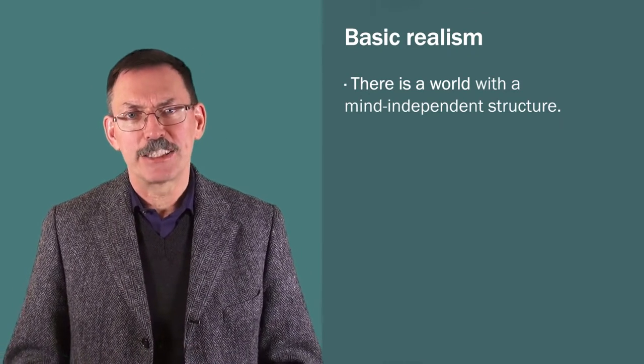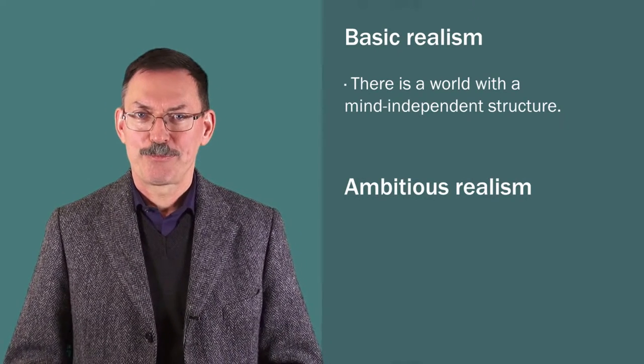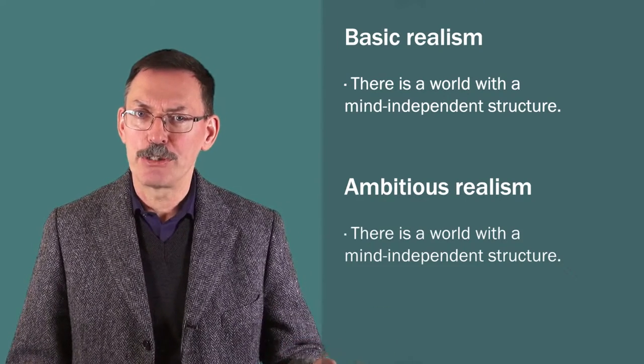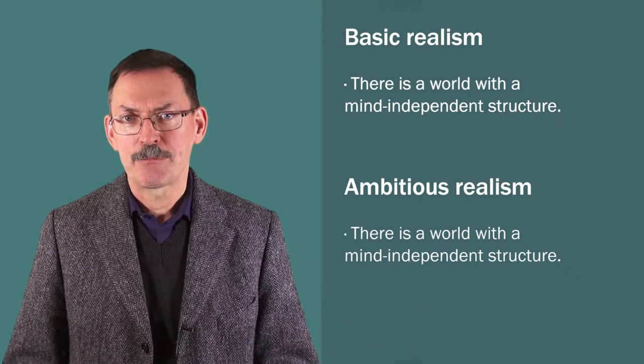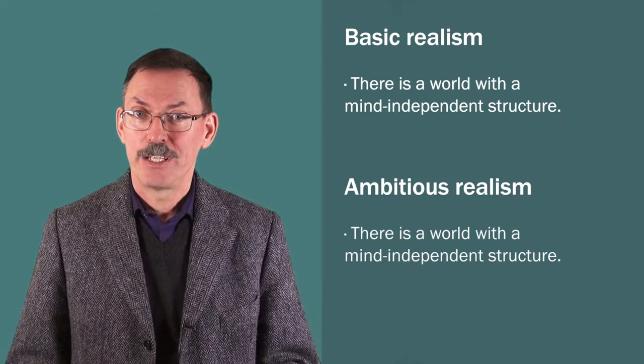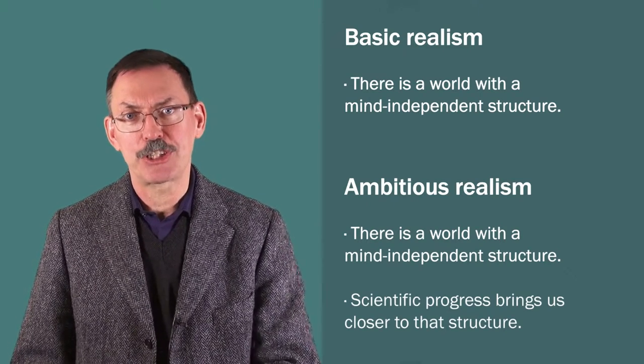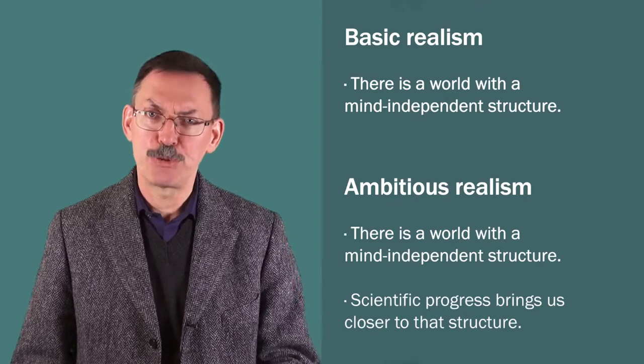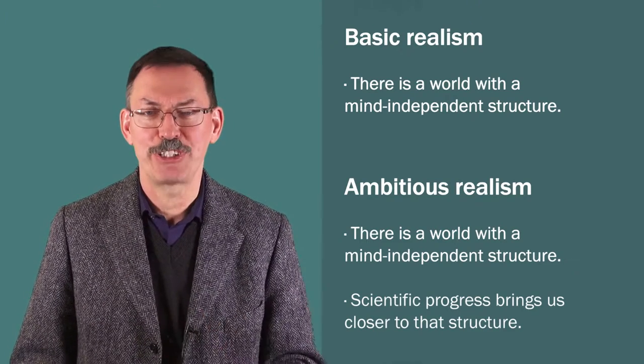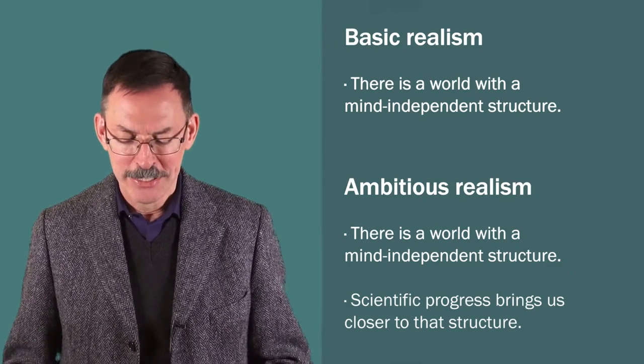Let's distinguish from that a second form of realism. Let's call that ambitious realism. Let ambitious realism be the view that there is a world independently of our thinking and that that world has a specific structure and that scientific progress consists in getting ever closer to that structure. This view is also sometimes called scientific realism. Let's just call it ambitious realism to have the contrast between basic and ambitious.